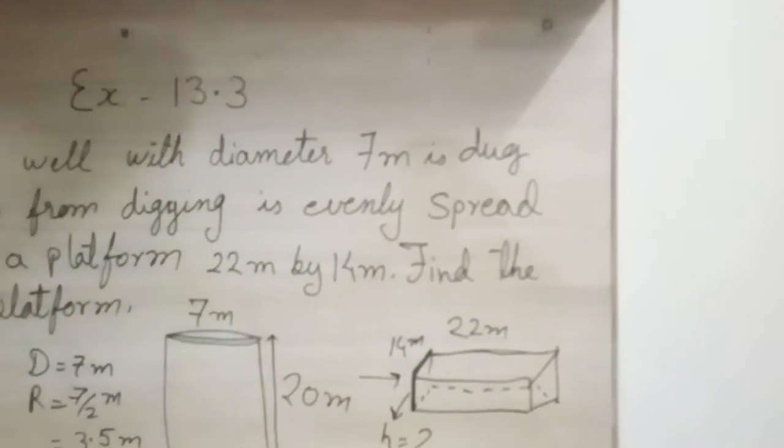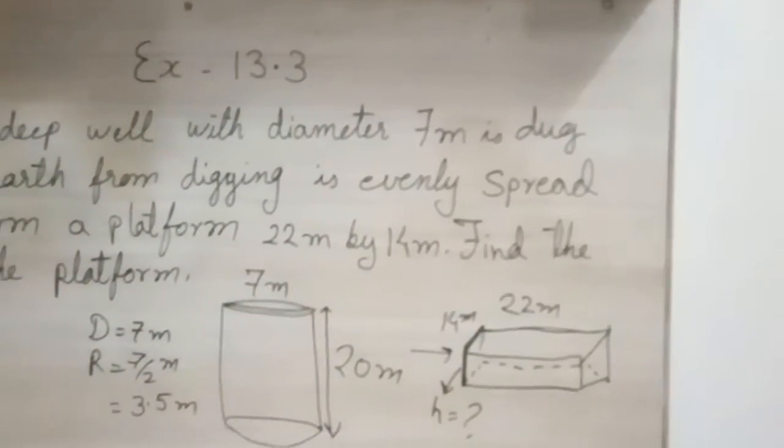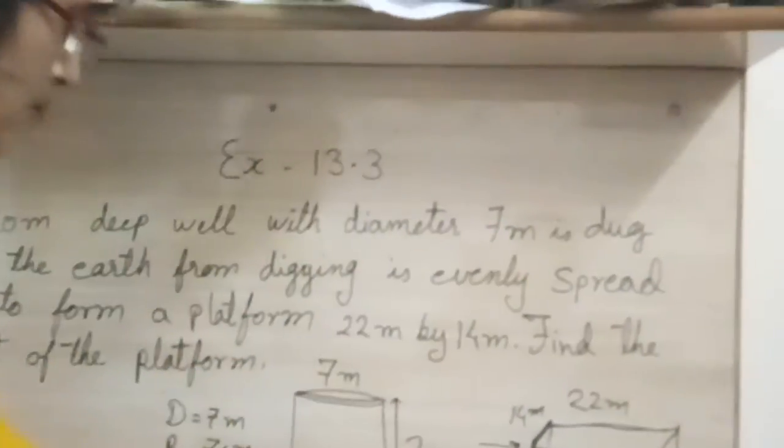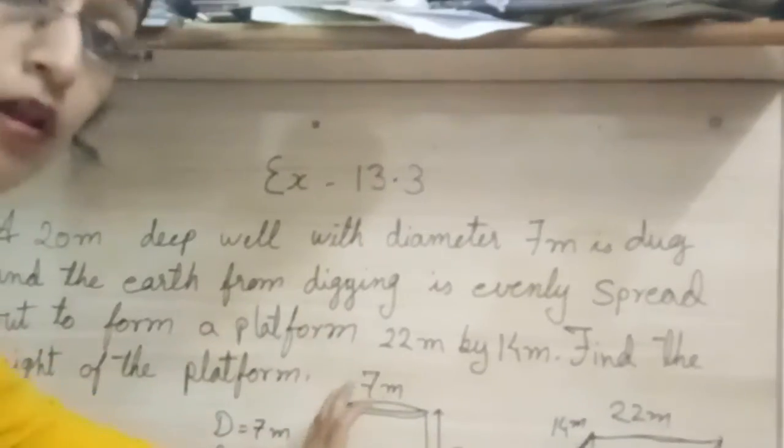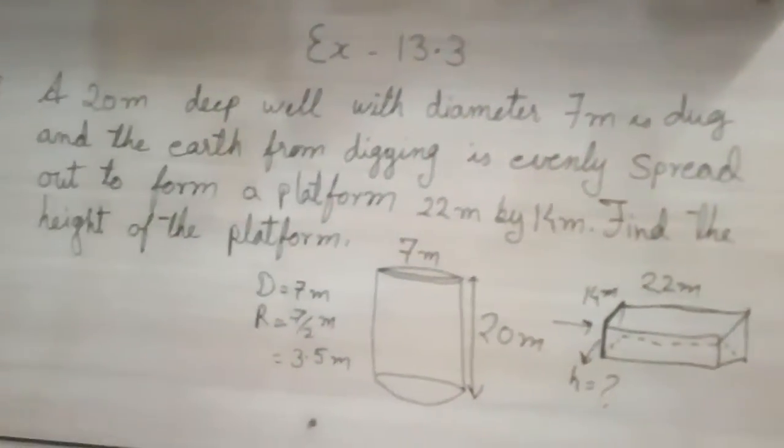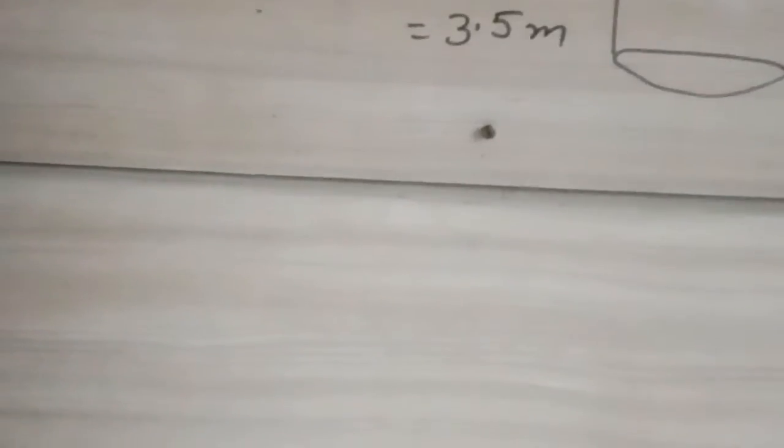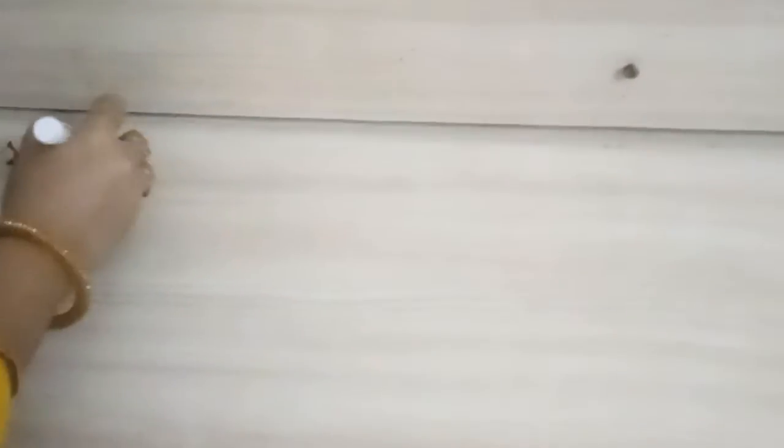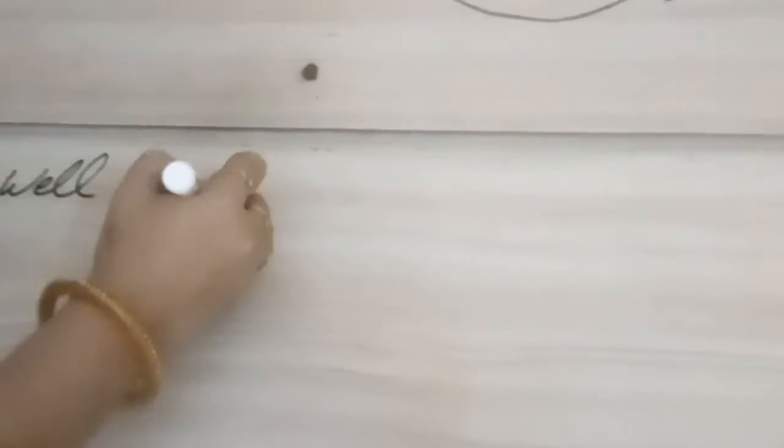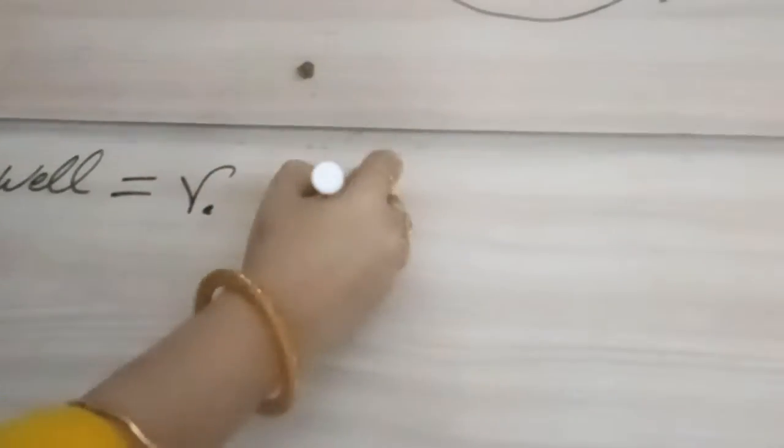See what is the height of the platform. So again concept is same. Volume before and volume after will remain same. So it means volume of cylinder will be equal to the volume of platform. So in solution we will use very simple thing. Volume of well will be equal to volume of platform.